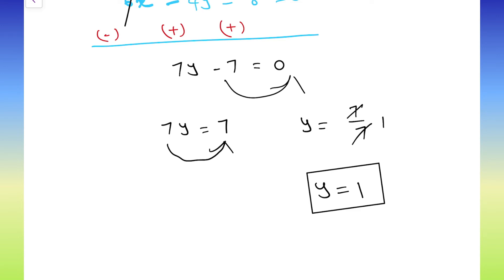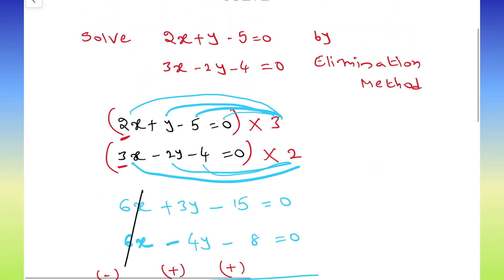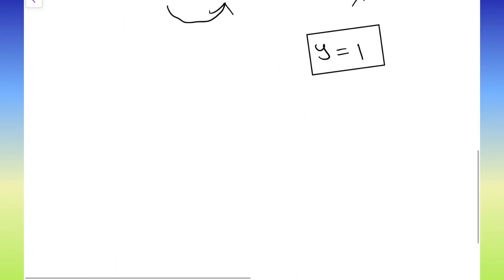Y value is 1. Now, this y value we need to substitute in any one of the equations. I am going to take the first equation that is 2x plus y minus 5. 2x plus y minus 5 equals to 0.